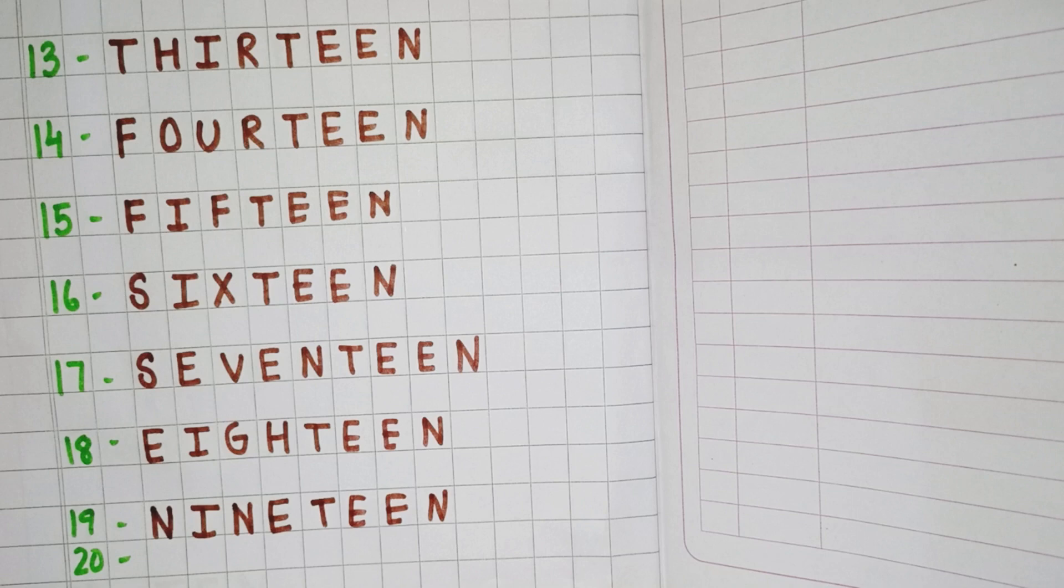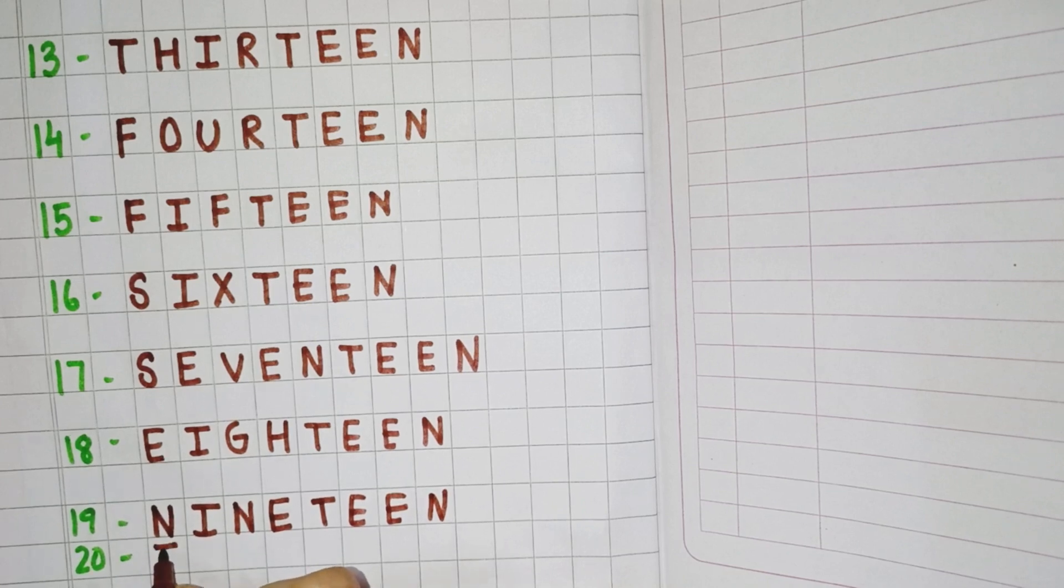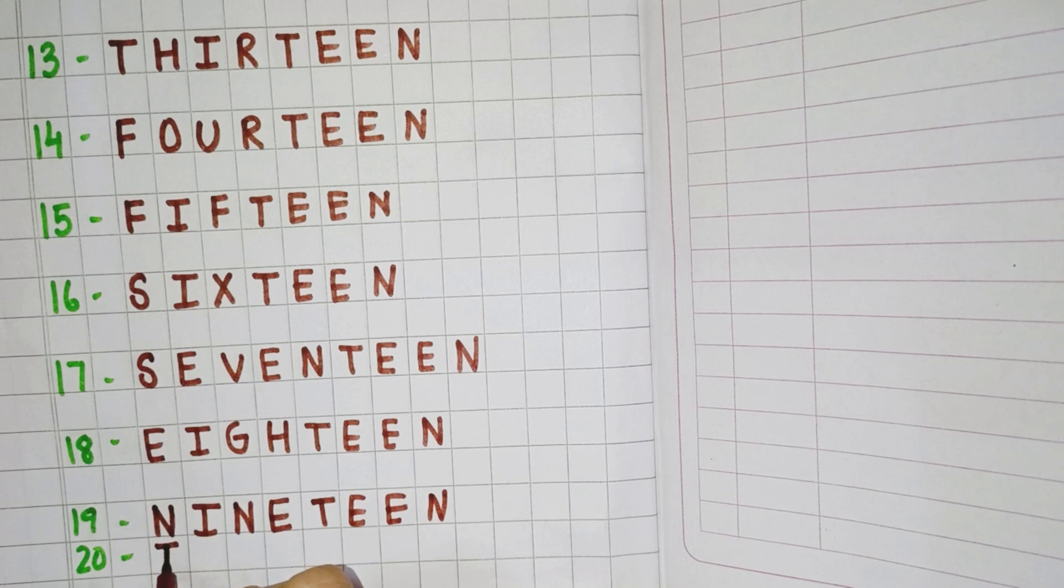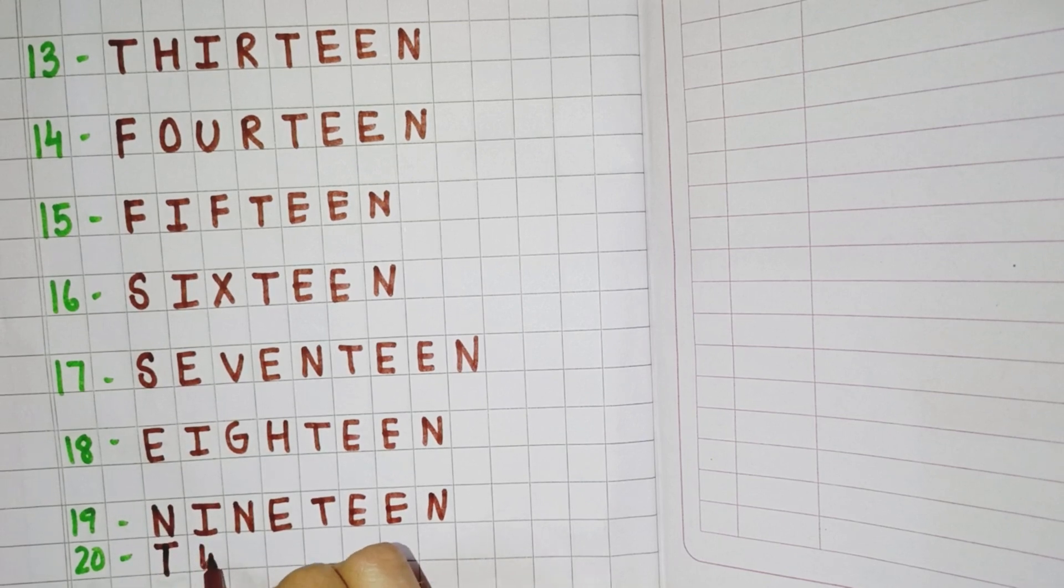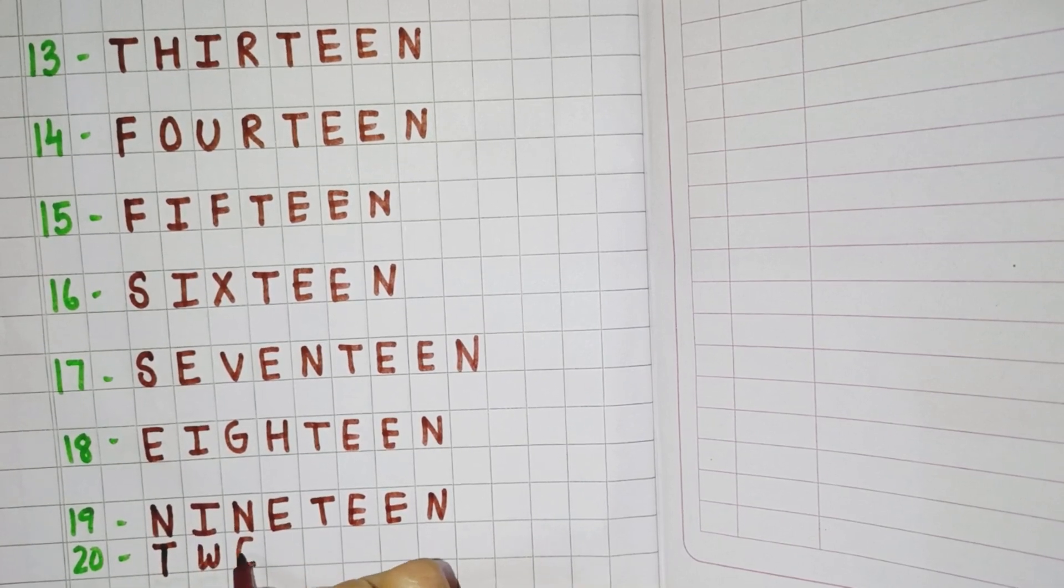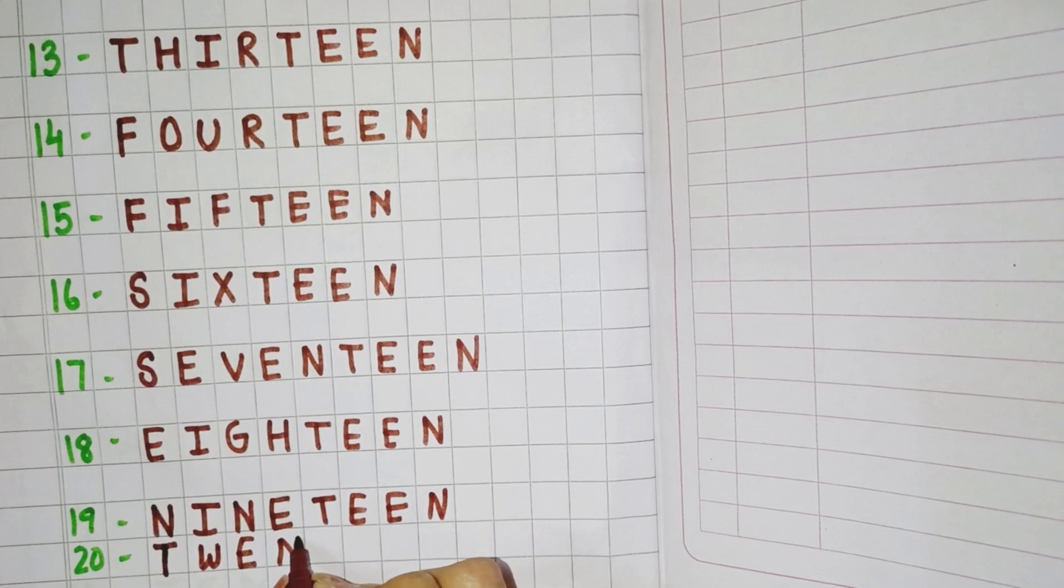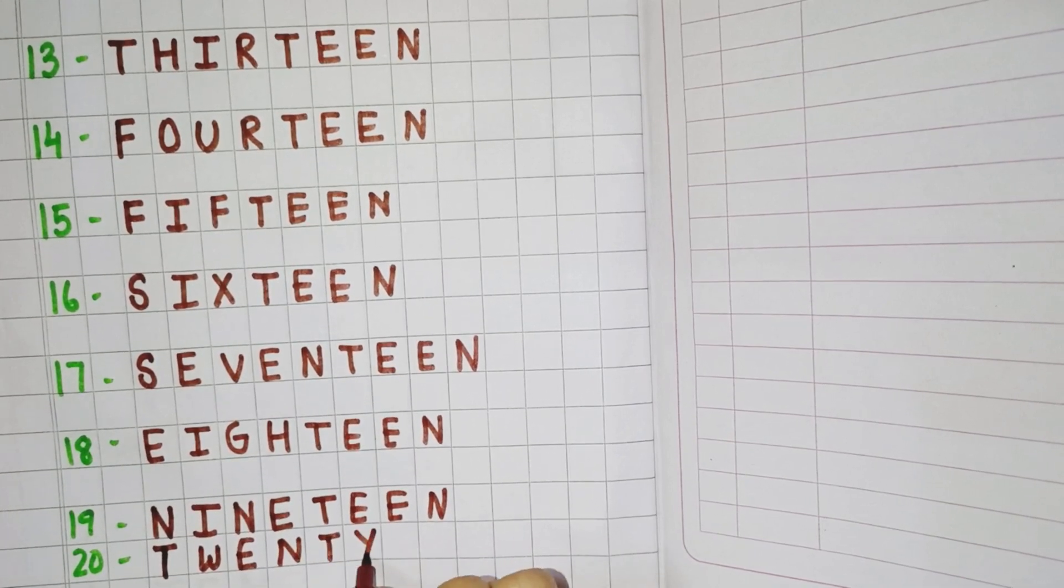Now the last one is 20. So you have to write the spelling of 20. You will write T, W, E, N, T, Y. Twenty.